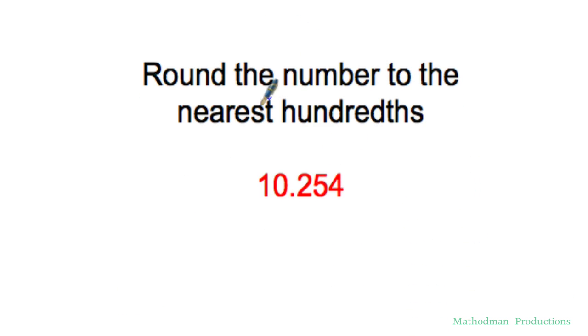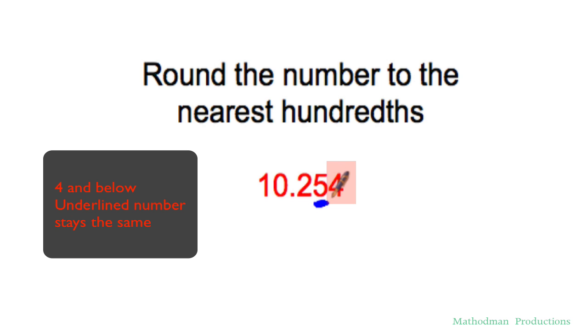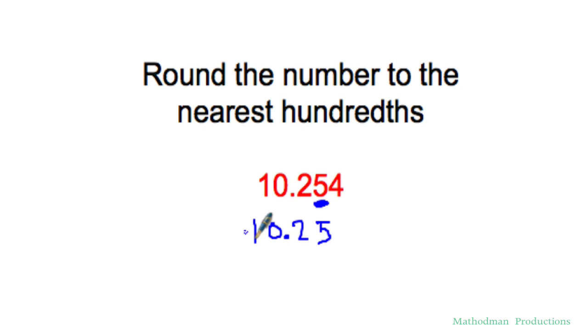Round to the nearest hundredths. Identify what's in the hundredths spot, which is this 5 right here. Take a look at the number to the right of it. That's a 4 and below, so this 5 does not change. We'll keep that as a 5. Everything to the left of it usually stays the same, so it's just 10.25. Pretty easy, let's keep going.